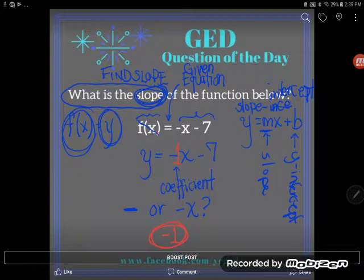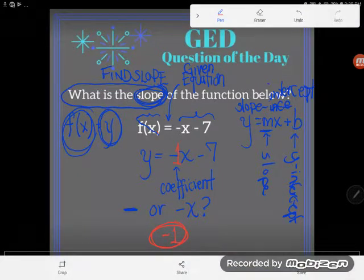Awesome, that's the answer. What's the slope of the function? It's negative one. All right, if you have any questions about that be sure to drop them in the comments. I will be happy to answer them.